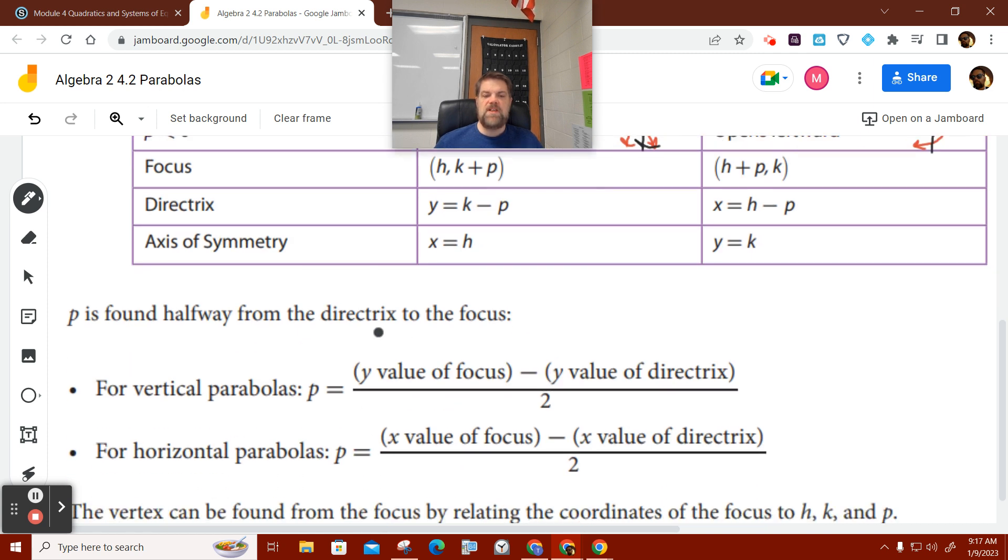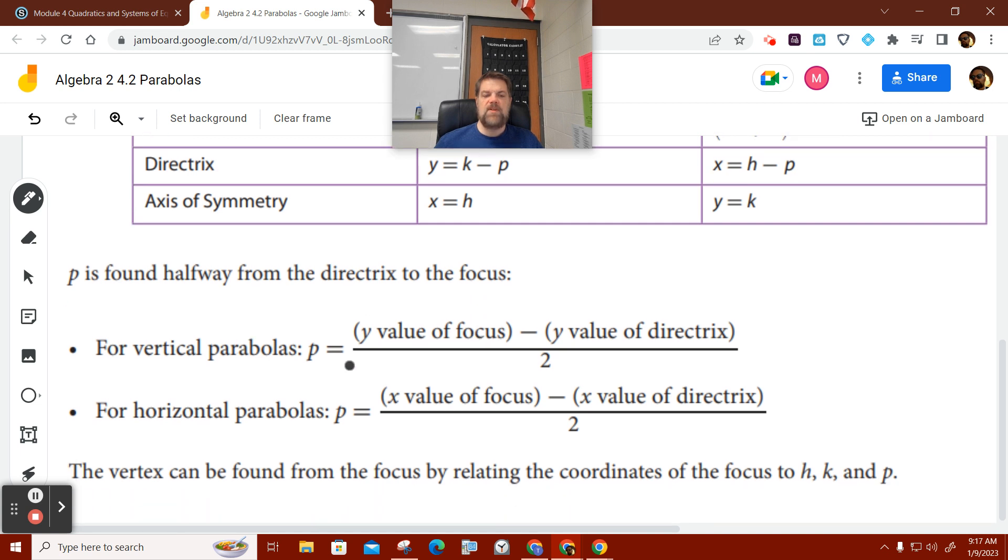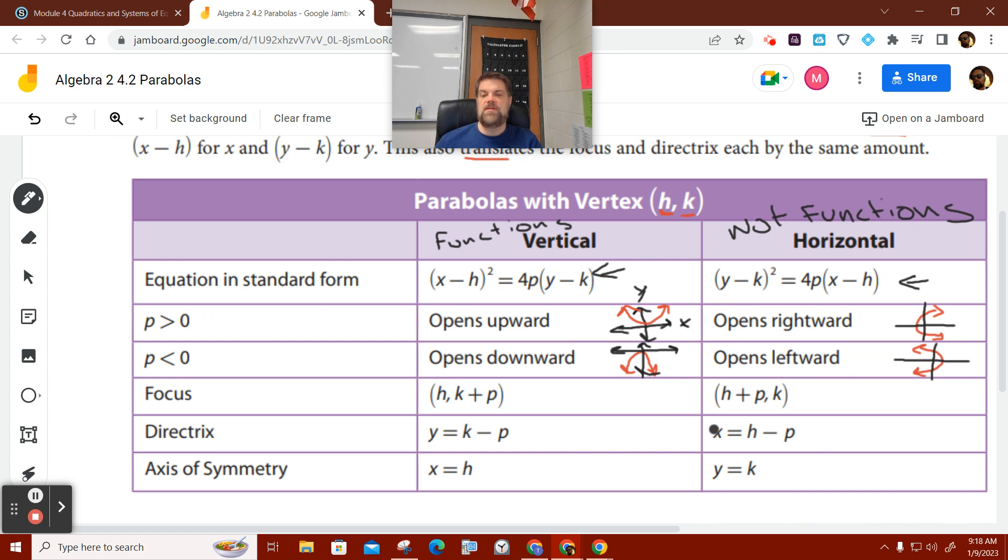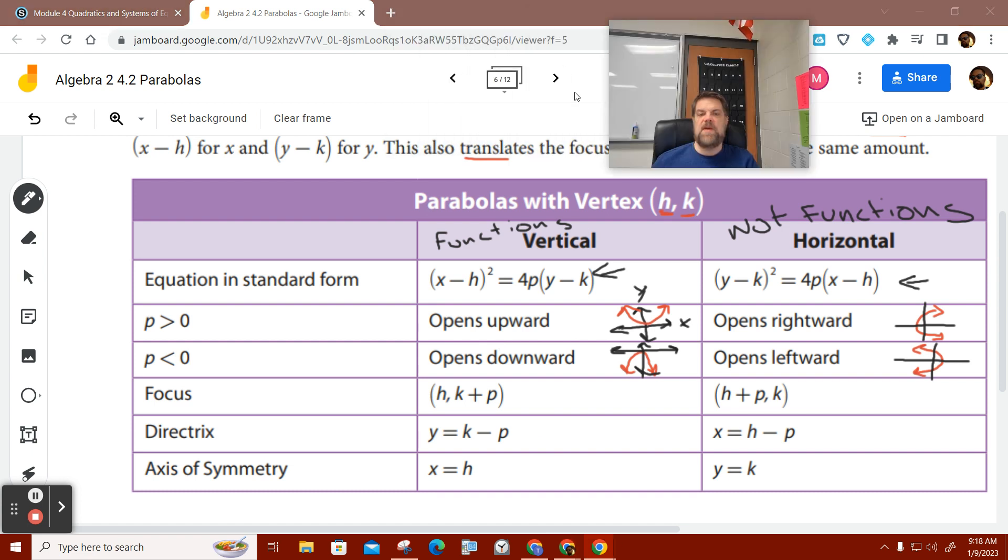So P is found halfway between the directrix and the focus. For vertical parabolas, P is the Y value of the focus minus the Y value of the directrix divided by two. For a horizontal parabola, it's the X value of the focus minus the X value of the directrix divided by two. So it's the arithmetic average of these X or Y values, depending on whether the parabola opens up or down, which is vertical, or sideways. So the vertex can be found by relating the coordinates of the focus to H and K and P. So again, we're basically going to be given some sort of information here, and then from that information, we're going to determine what P, H, and K are, and then work backwards to figure out the rest.